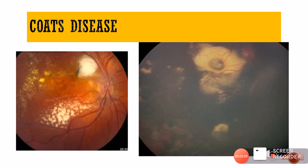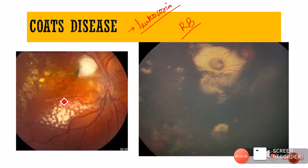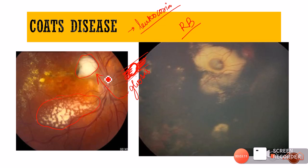The sub-retinal space is quite large, so exudation can be quite massive. This is typically seen in Coats disease — a condition affecting boys, mostly unilateral, and a leading cause of white pupillary reflex (leukocoria), a close differential of retinoblastoma. In Coats disease, the exudates appear deeper than in diabetic retinopathy, and accompanying signs include telangiectasias, bulb-like microaneurysms visible on FFA, and gliotic nodules from organized sub-retinal exudates.